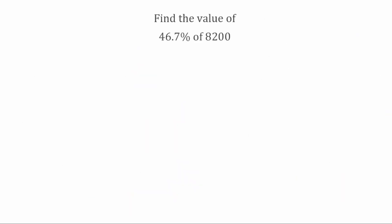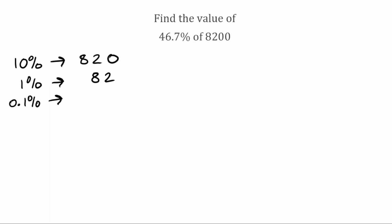For this final question, we've got: find the value of 46.7% of 8,200. Just like the examples before, the first thing we're going to find is what 10% would be. So we take 8,200, divide it by 10 — that gives us 820. We then find 1% by dividing by 10 again — 820 divided by 10 gives us 82. And then we find 0.1% by dividing by a further 10 — 82 divided by 10 gives us 8.2.